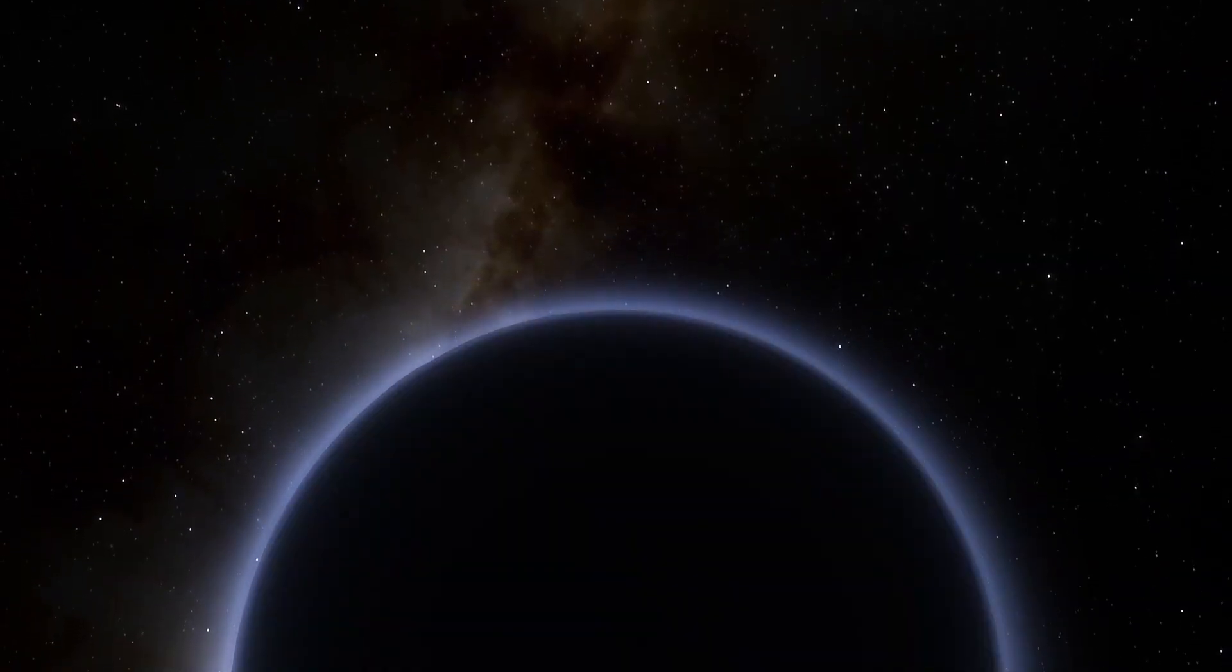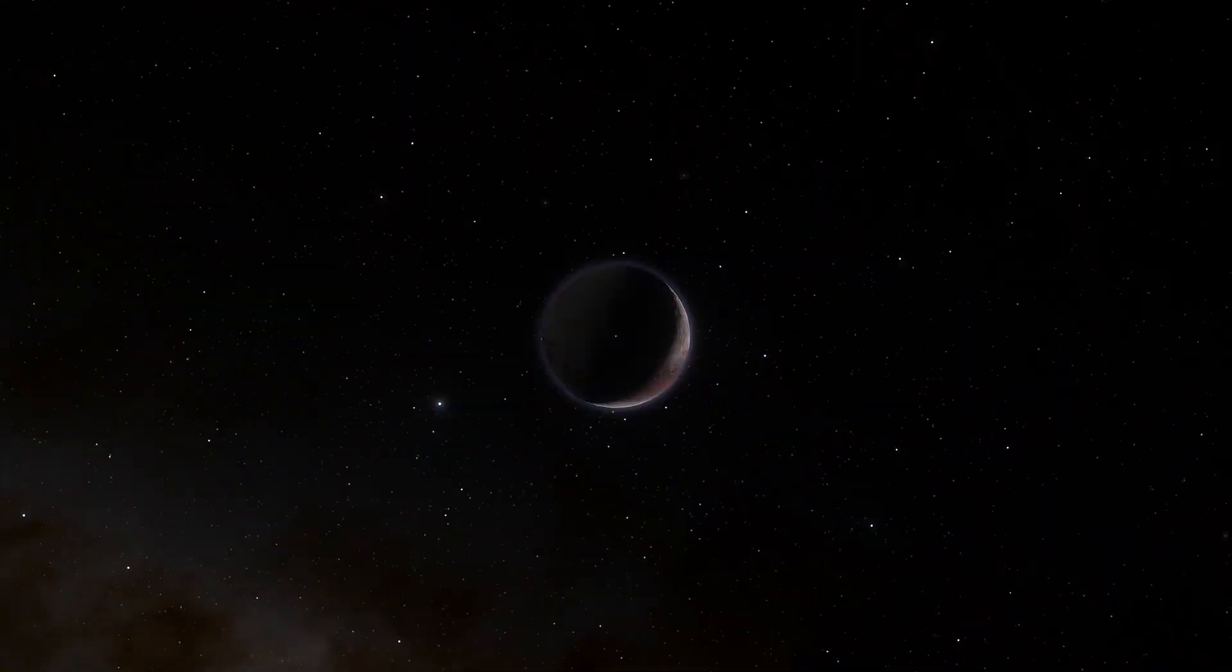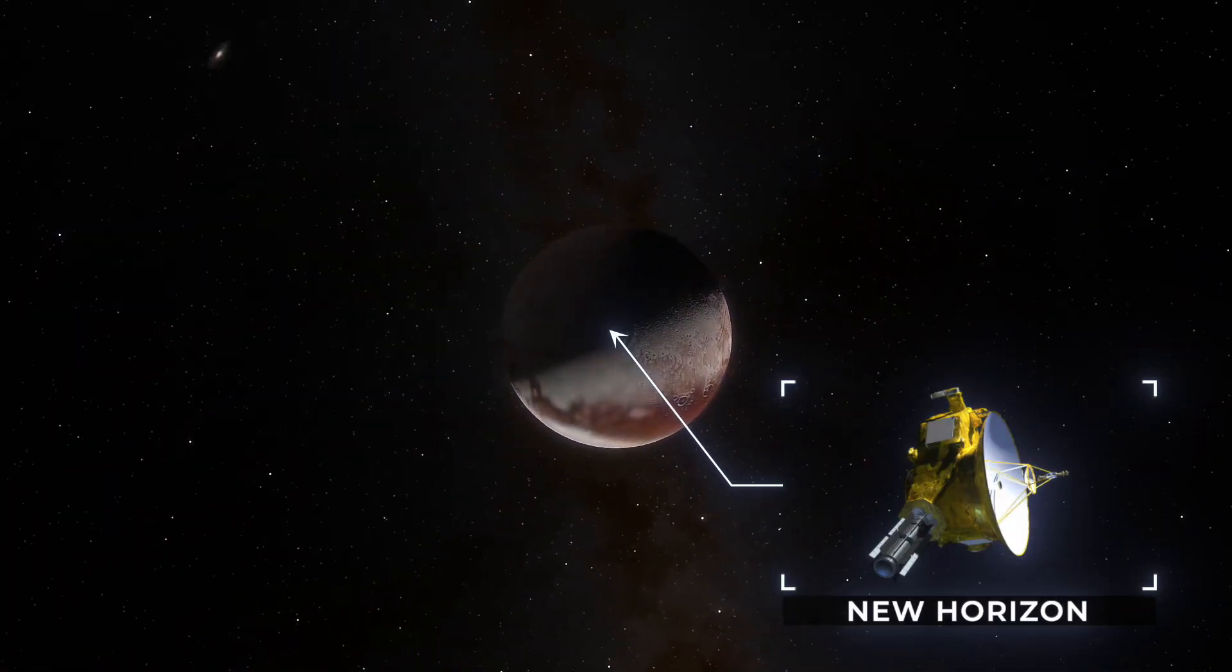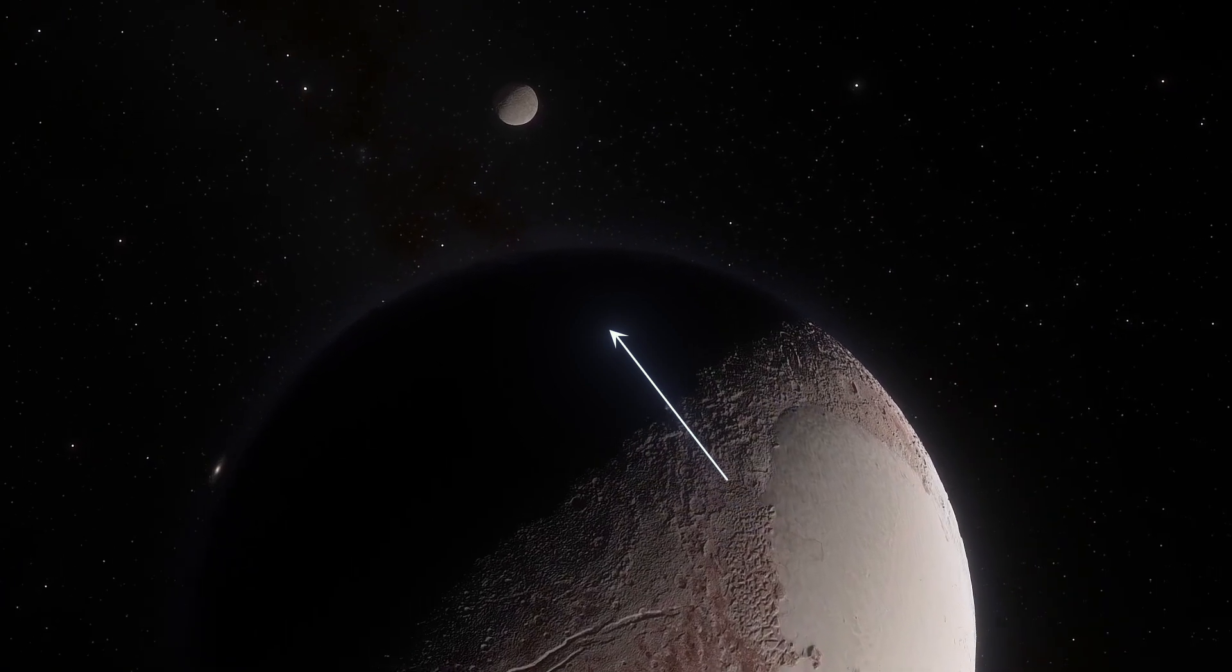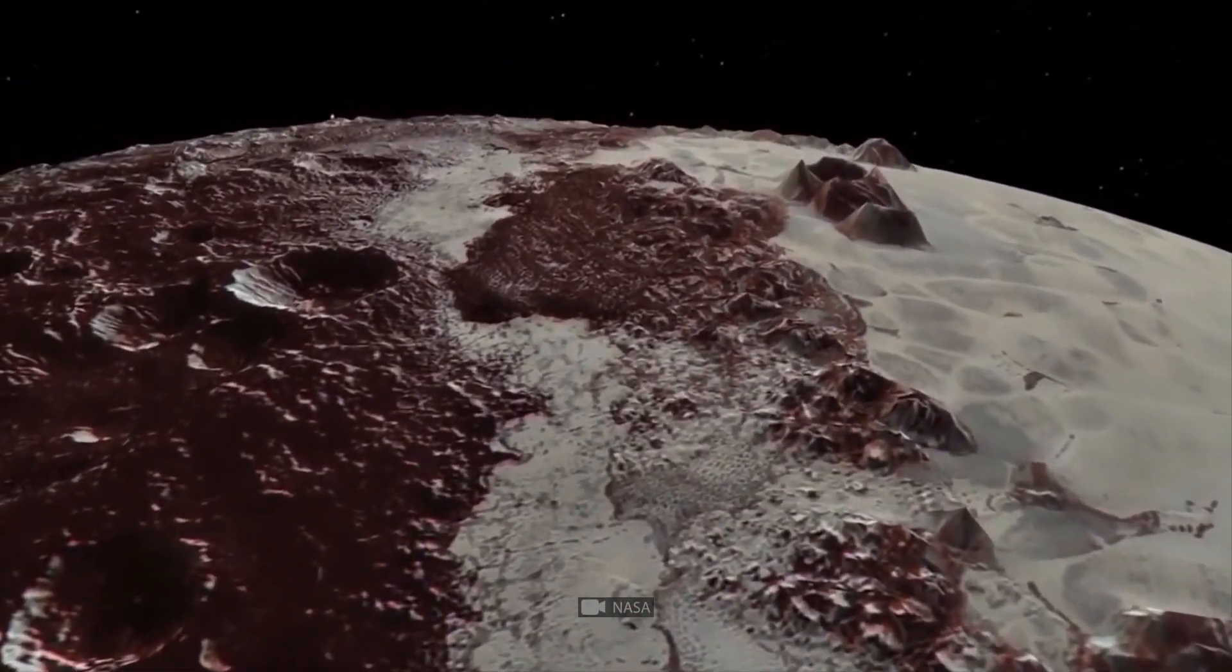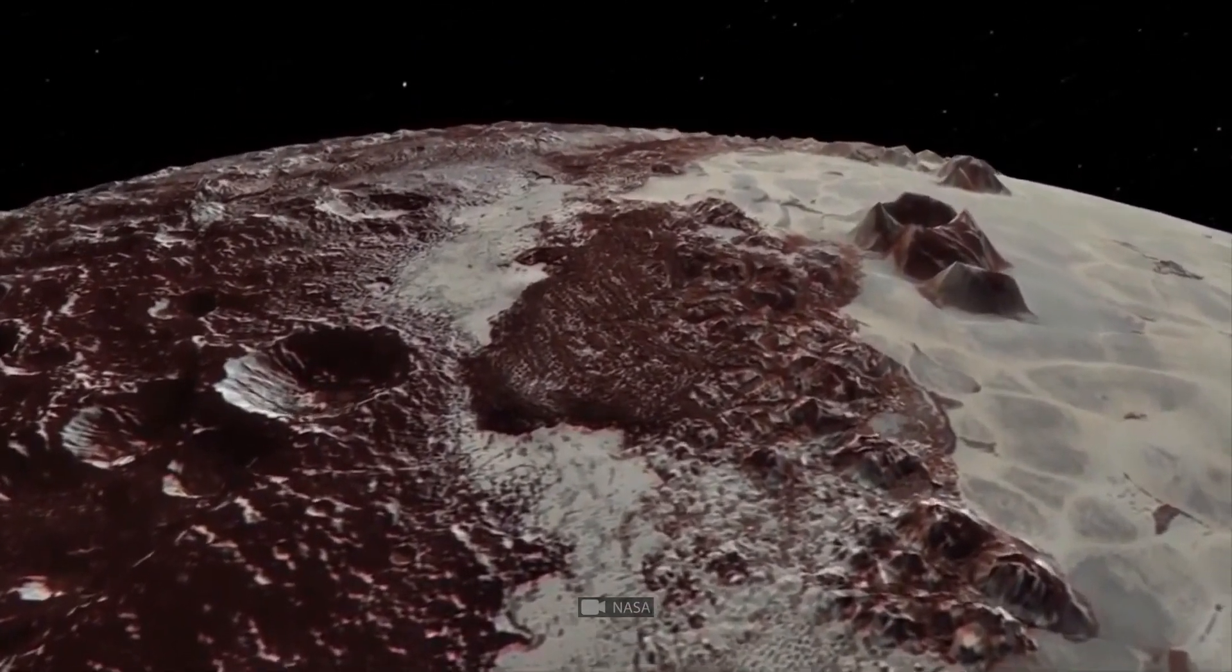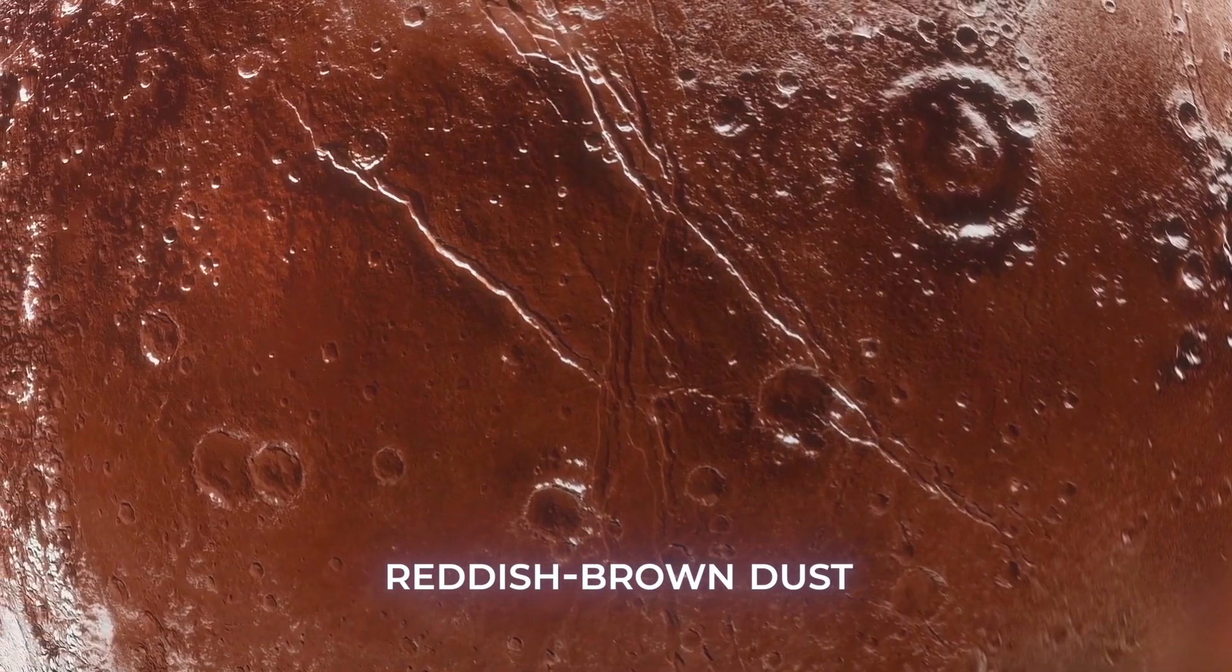Being so remote, Pluto was only first visited by a space probe, New Horizons, in 2015. The craft's brief flyby revealed an astonishingly complex surface. Deep craters, craggy mountains, and steep cliffs of ice, all covered in reddish-brown dust.